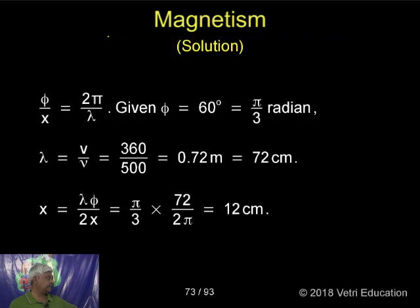The lambda, v is equal to nu lambda. Therefore, lambda is equal to v by nu. That is 360 by 500, point 72 meters, that is 72 centimeters.